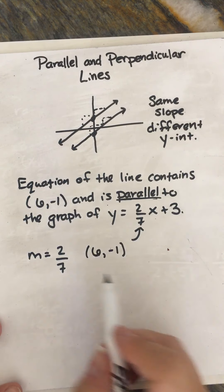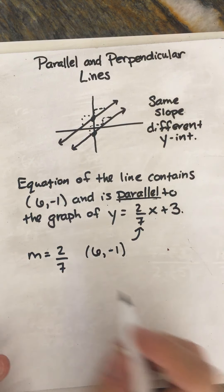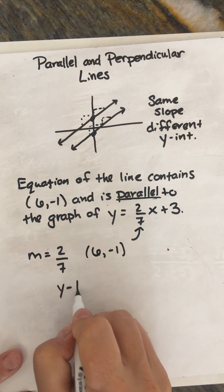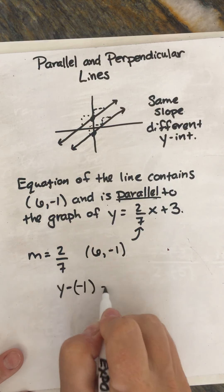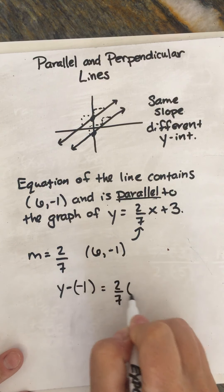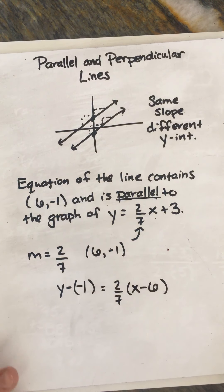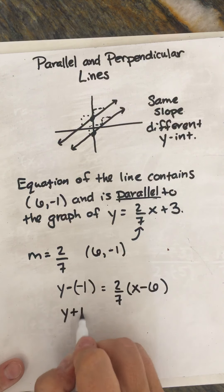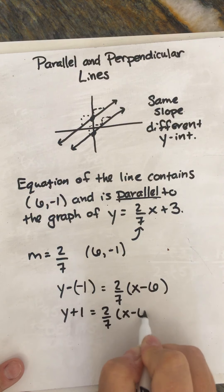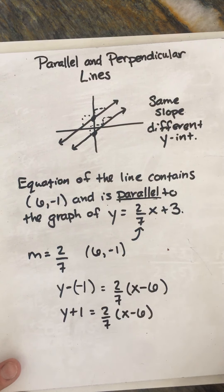So you have a point and a slope, so we can use point-slope form from last time: y - y₁ = m(x - x₁). And so I'm going to clean it up a little bit. We could also write this in slope-intercept form.